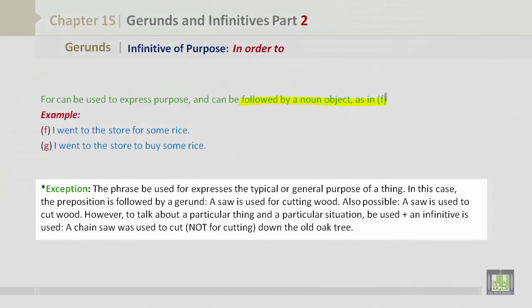Now there is an exception to the rule. The phrase be used for expresses the typical or general purpose of a thing. In this case, the preposition is followed by a gerund. A saw is used for cutting wood. Also possible would be a saw is used to cut wood. However, to talk about a particular thing and a particular situation, be used plus an infinitive is used. A chainsaw was used to cut, not for cutting, down the old oak tree.